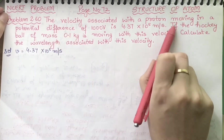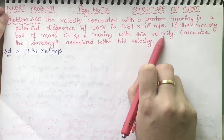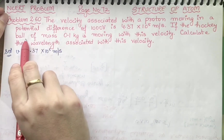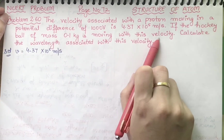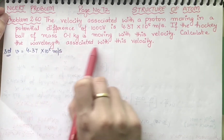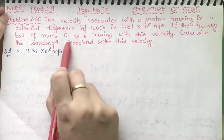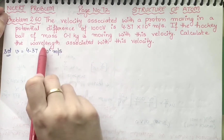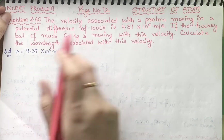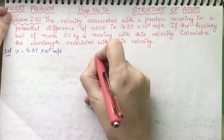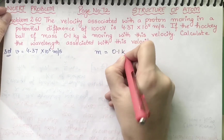If a hockey ball of mass 0.1 kg is moving with this velocity, calculate the wavelength associated with this velocity. So with this velocity, the mass of this ball will acquire a certain wavelength. You have to write the mass of the ball — how much is it? 0.1 kg.